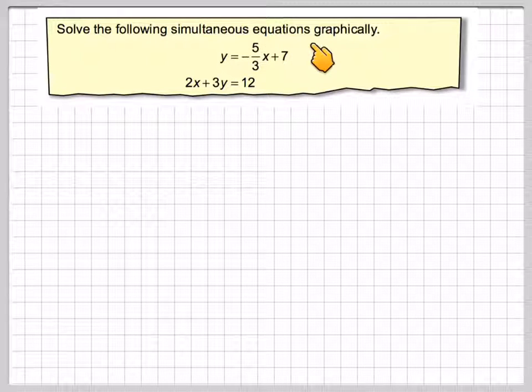Solve the following simultaneous equations graphically: y is equal to minus 5 over 3x plus 7, and 2x plus 3y is equal to 12.